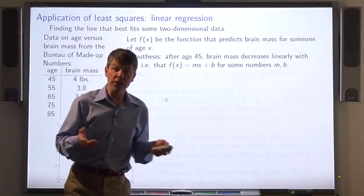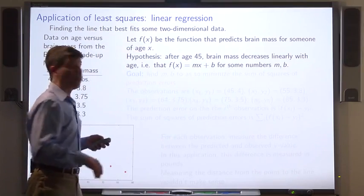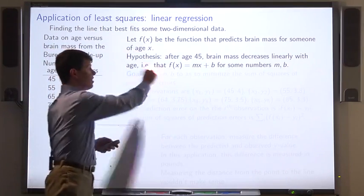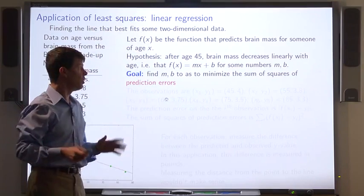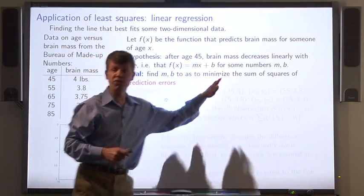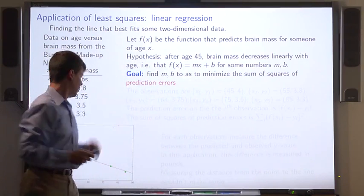And our goal is to figure out what those numbers are. Which numbers m and b should we choose in order that this function best match our data? And what do we mean by best match? Our goal will be to minimize the sum of squares of prediction errors.